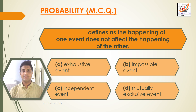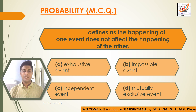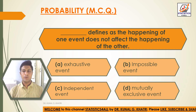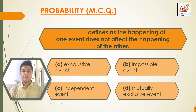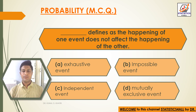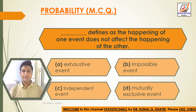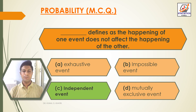Next question: dash is defined as the happening of one event does not affect the happening of the other. Option A: objective event. Option B: impossible event. Option C: independent event. Option D: mutually exclusive event. The answer is Option C — independent event.